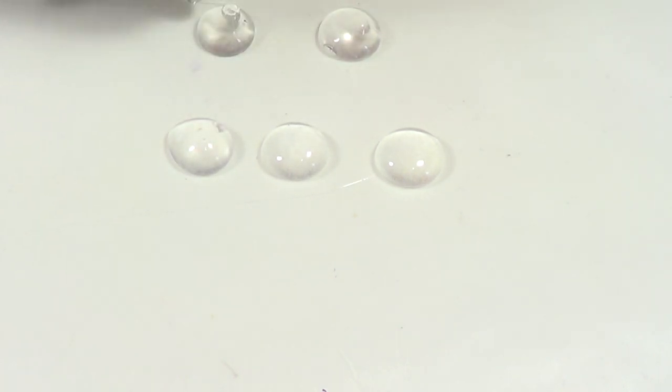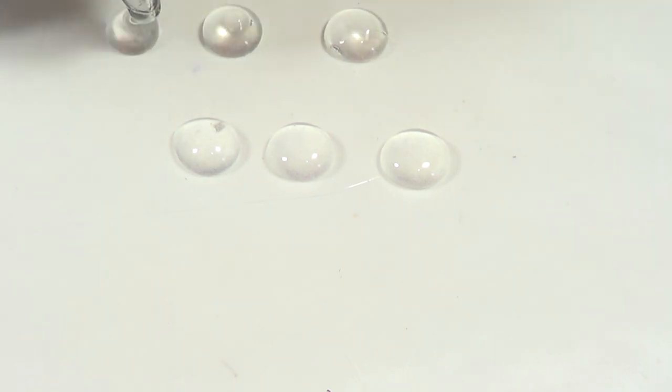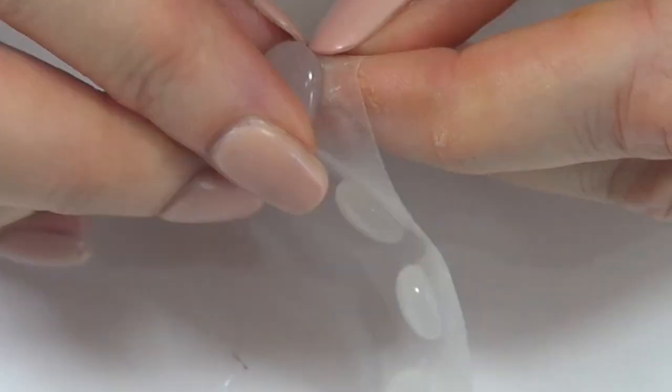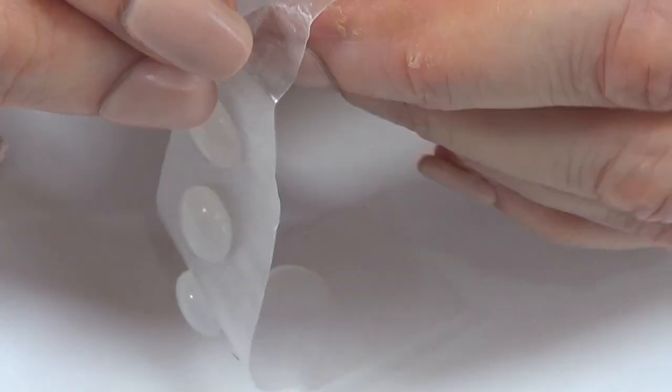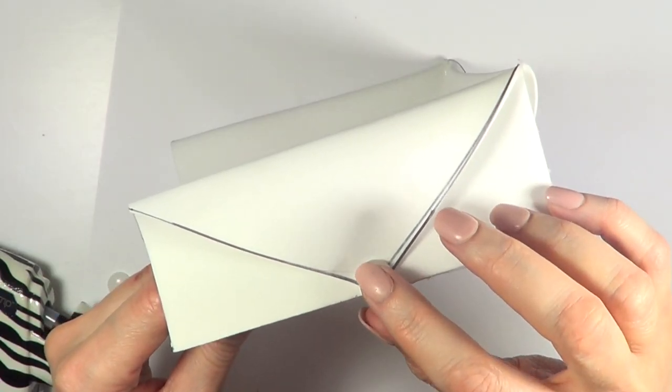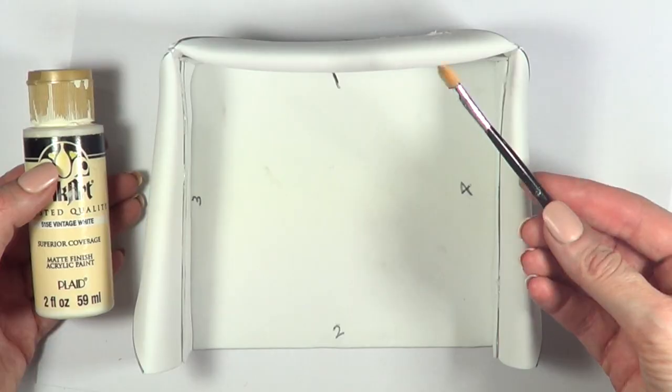As you can see, it took me a bunch of different tries to get to the three that I like the most. I'm just peeling this from the wax paper and then hot gluing this to that part of the envelope.